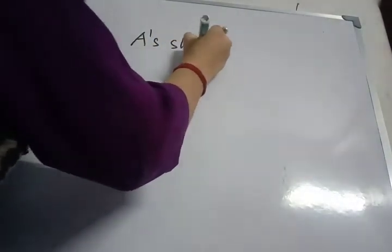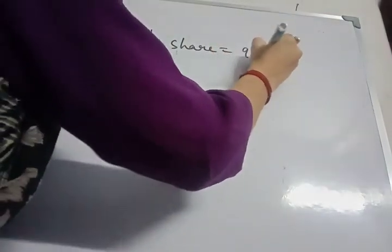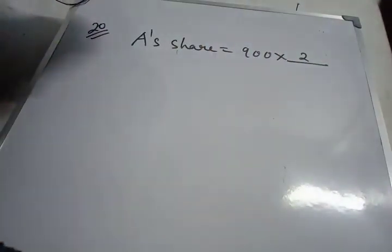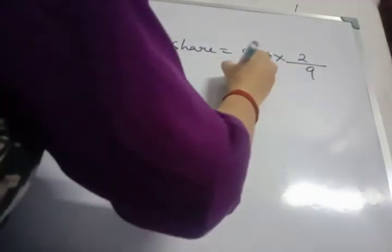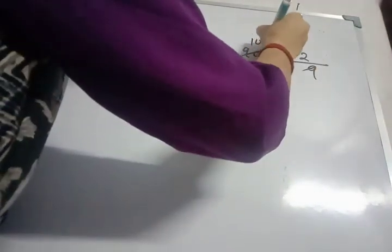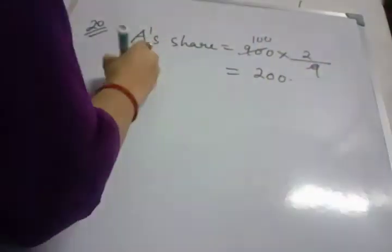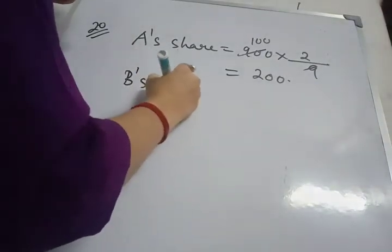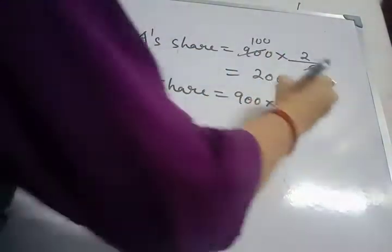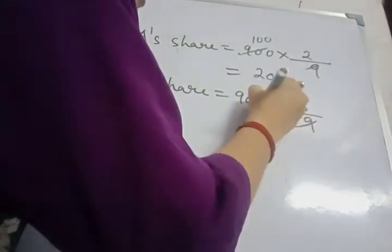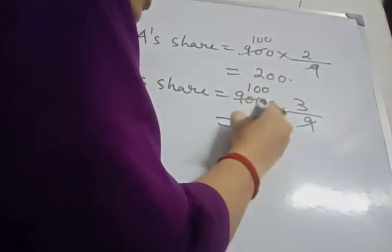So A's share is how much? 900 into A's part that is 2 by the total. That is 2 plus 3 plus 4. So it is 9. So this is 100. This one is 200. B's share is 900 into 3 by 9 which equals to 300.